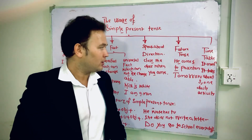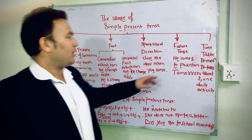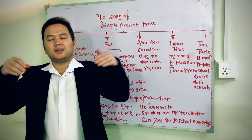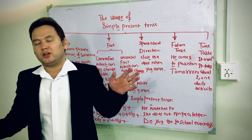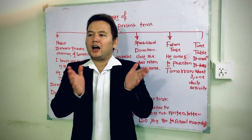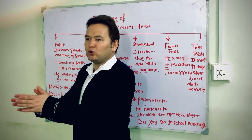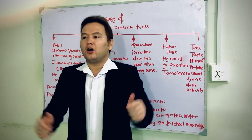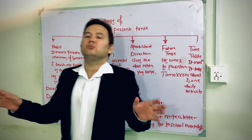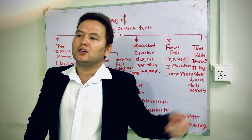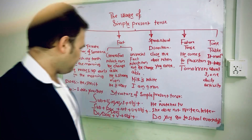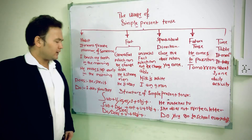Number five is timetable. A timetable includes all activities from morning till evening. For example: 'I wake up early in the morning, I brush my teeth, I change my clothes, then I go jogging. After jogging I come back home, change my clothes, have breakfast, then I go to my job.' This sequence of daily activities is called a timetable.